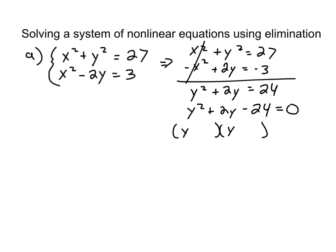So, let's think of two terms. When you multiply them together, you get negative 24. And then when you add them together, you get plus 2. So, that's going to be plus 6 and minus 4. So, let's go ahead and set y plus 6 equal to 0 and y minus 4 equal to 0. If either of those equal to 0, the whole thing goes to 0. So, this would be y equals negative 6 or y equals positive 4.